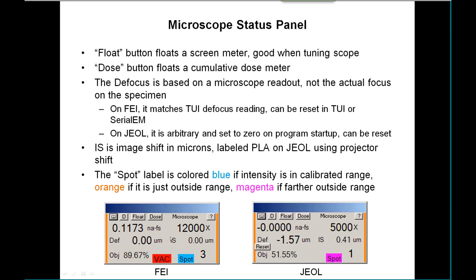The IS stands for image shift and it's in microns. It's always good to have an idea of how far out you are from the center, especially if you have a limited range. It will be labeled PLA on the JEOLs that use projector shift.